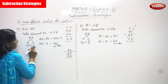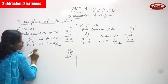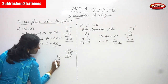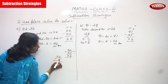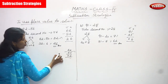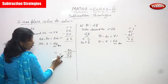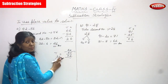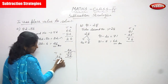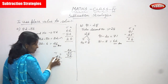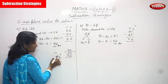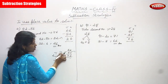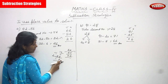Now write 32 again and subtract with the 1's. That is 32 minus 6. The 1's place has 2, which is not enough to subtract 6 because 2 is a smaller number and 6 is a greater number. So you have to borrow from the 10's place — borrow 1 ten. So this 3 becomes 2 and this 2 becomes 12.